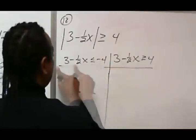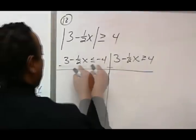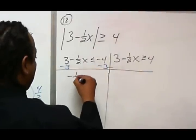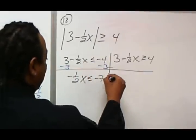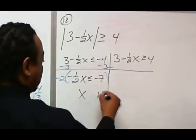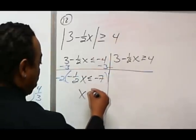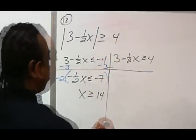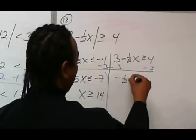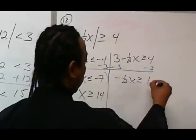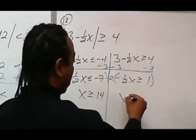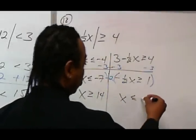I'm going to subtract 3 from both sides here, getting negative 1/2x less than or equal to negative 7. Multiplying by the reciprocal, which is negative 2, we get positive x and positive 14. But the sign will change, giving us x greater than or equal to 14. On the other side, subtracting 3 gives negative 1/2x greater than or equal to 1. Multiplying by negative 2, we get x less than or equal to negative 2.